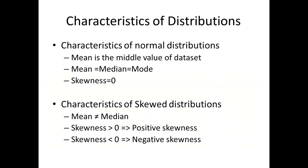In the scope of our course, we are only interested in normal distributions and the deviations called skewness. For normal distributions, the mean equals the median, which equals the mode — the highest frequencies occur at the mean and median values, and skewness is always zero. For skewed distributions, mean and median are not equal. Skewness greater than zero is positive skewness; skewness less than zero is negative skewness.